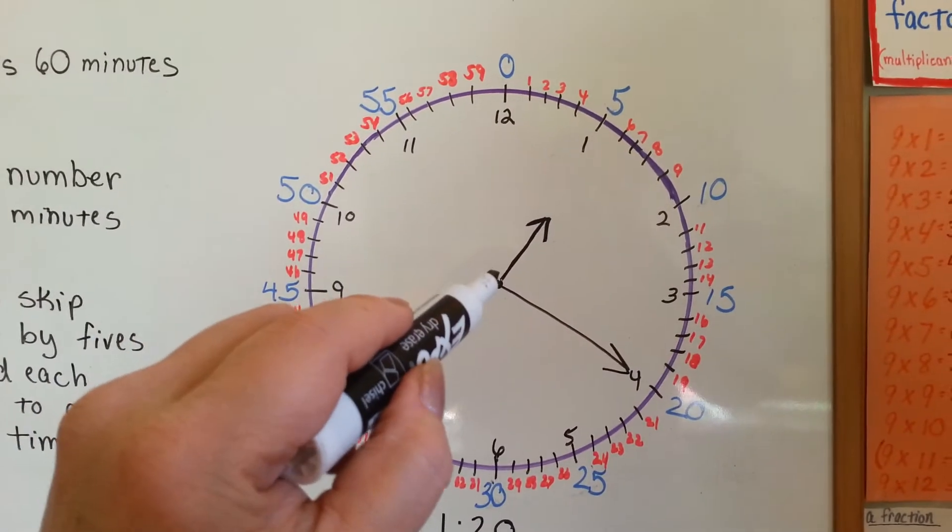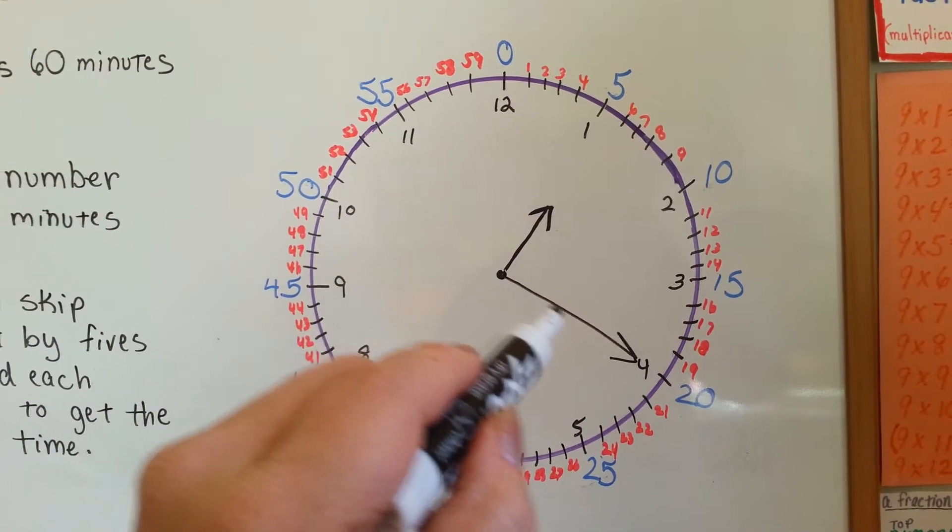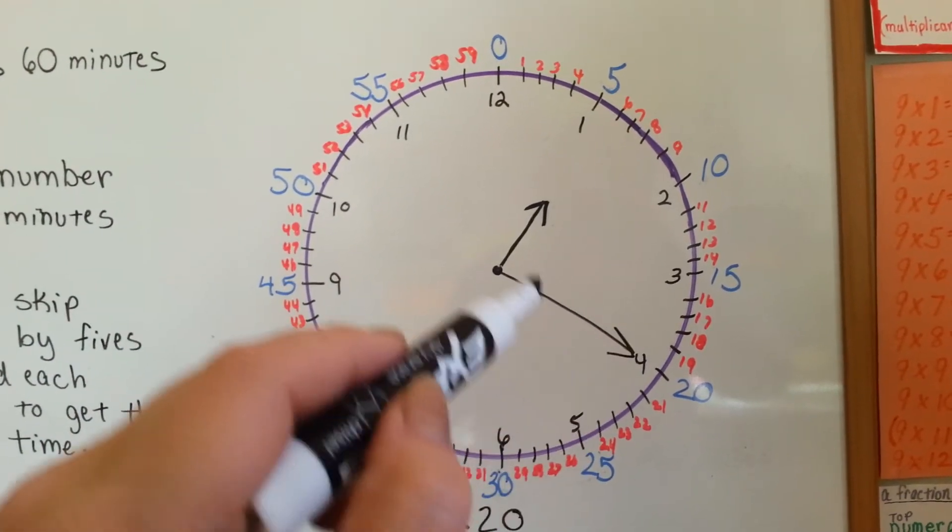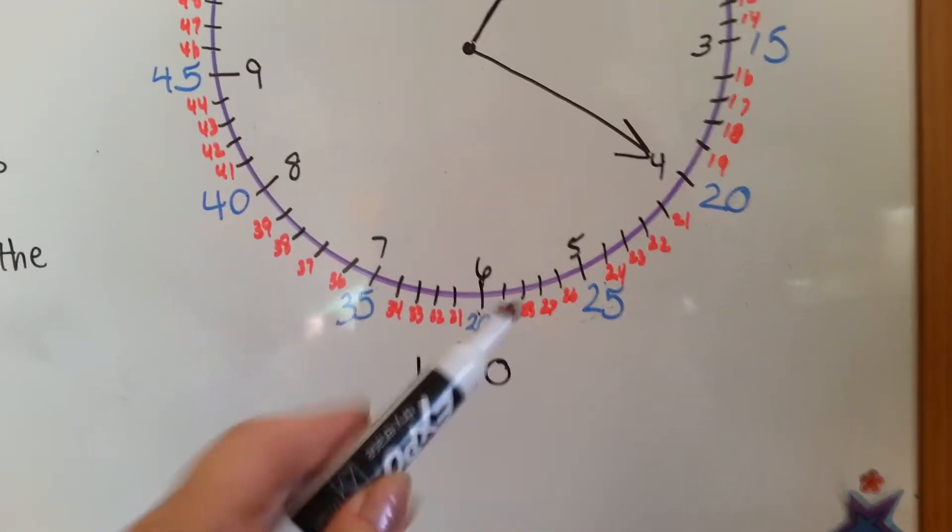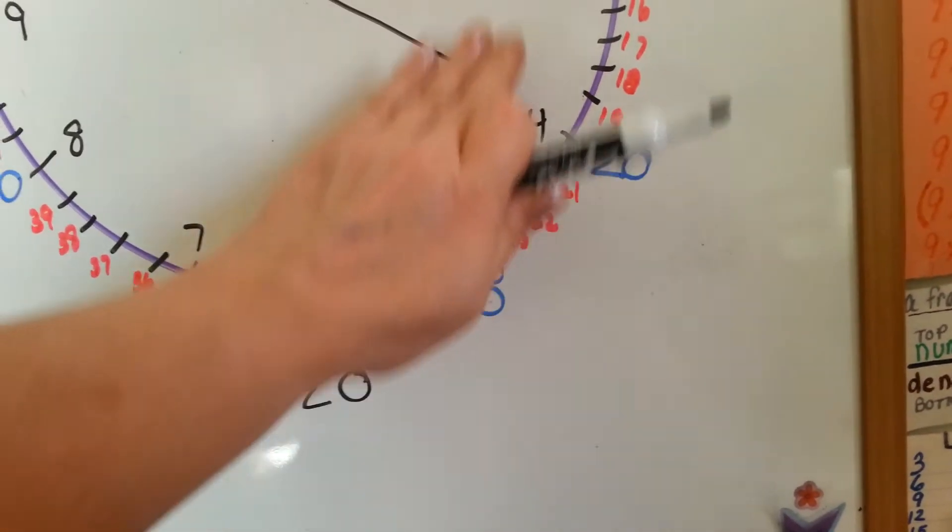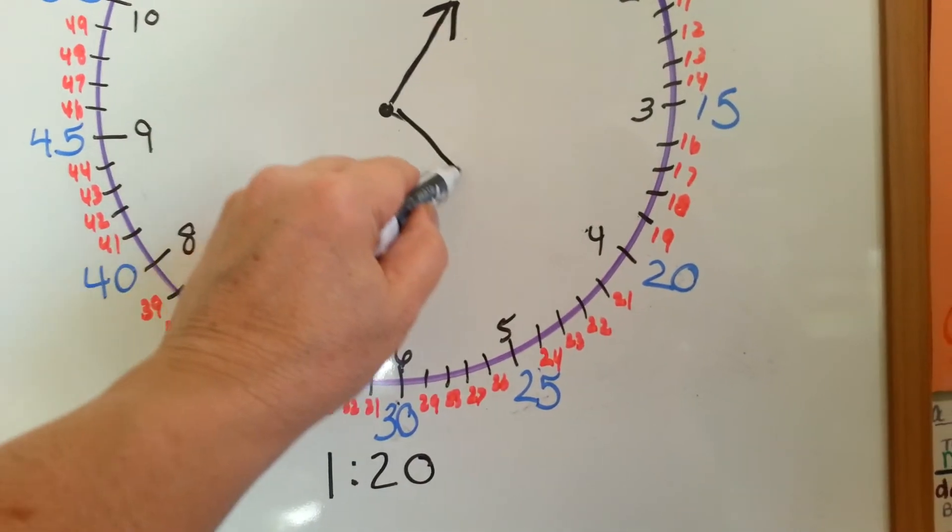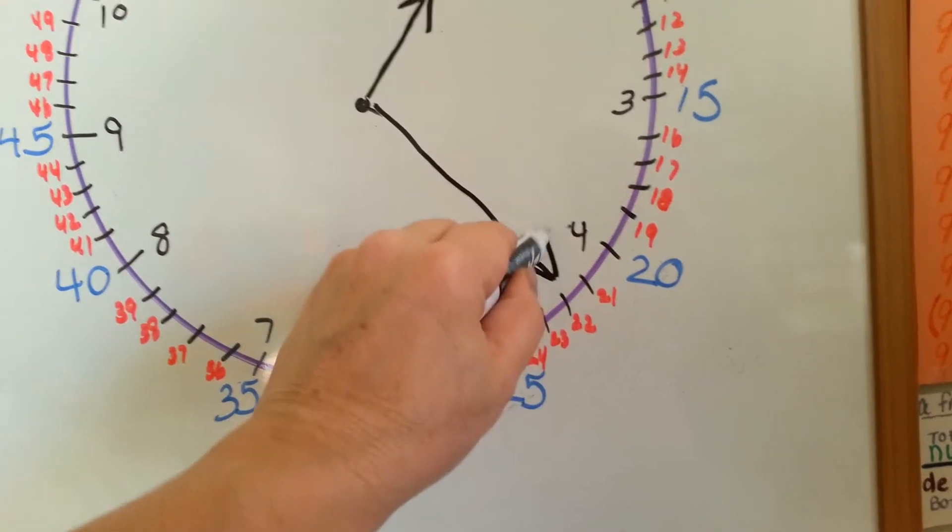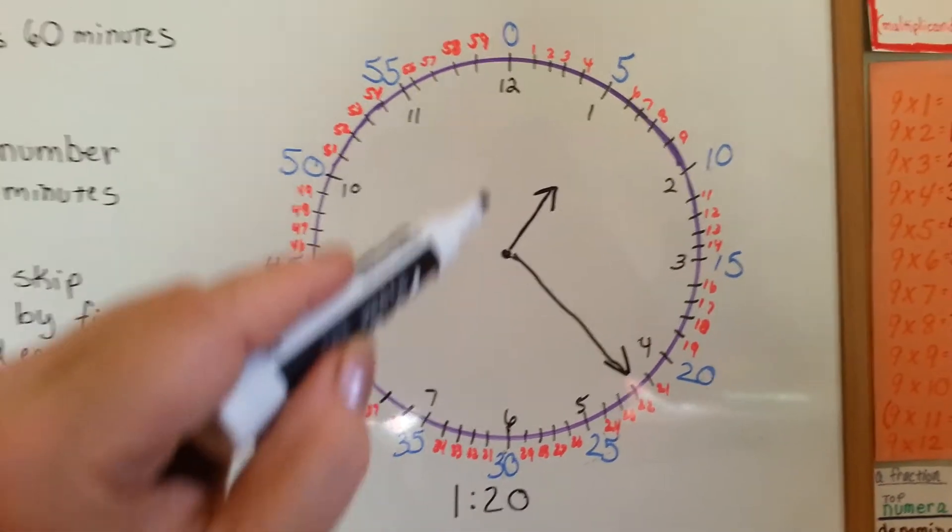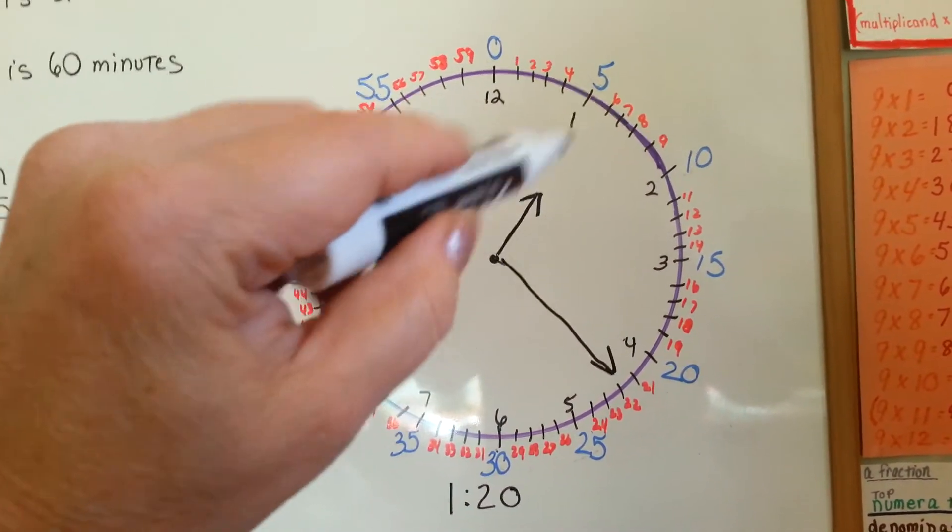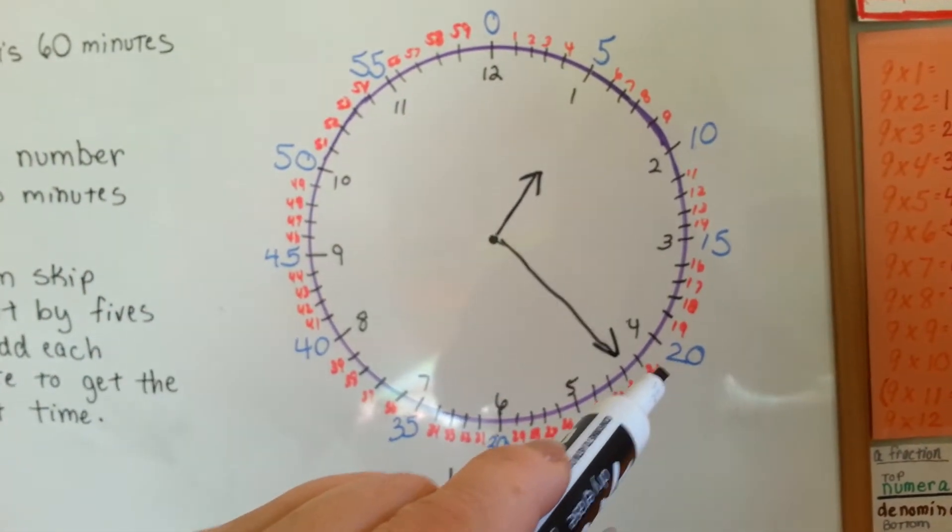So, if the hour hand is pointing close to the 1 and the long minute hand is pointing to the 4, it's 1:20. Like this, 1:20. But if the minute hand is moved, let's move the minute hand to here, it's now 1:22. So, what you can do is say, it's 1, we know the 1 for the hour, and then it's 5, 10, 15, 20, 21, 22.